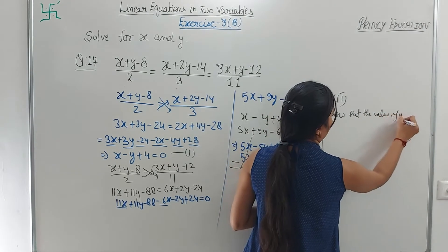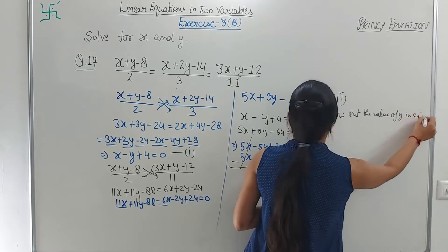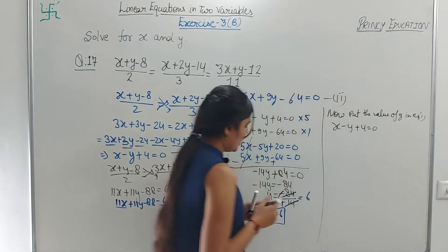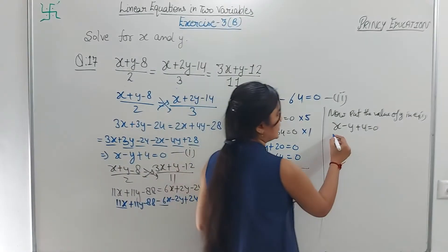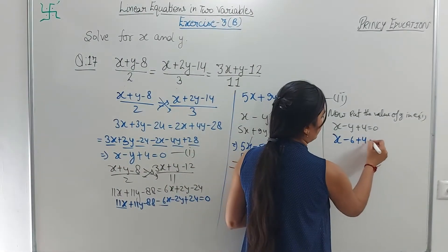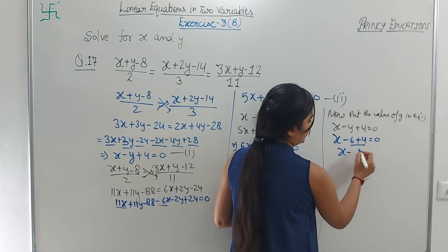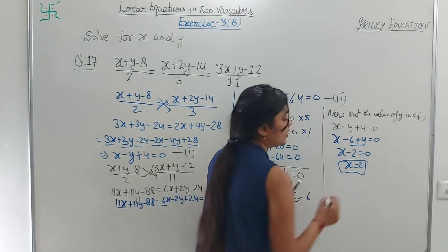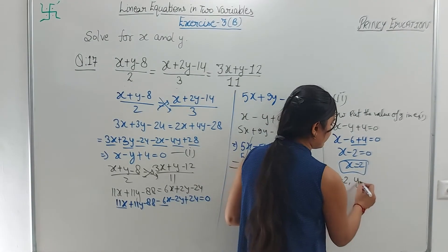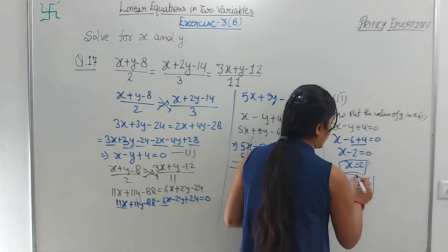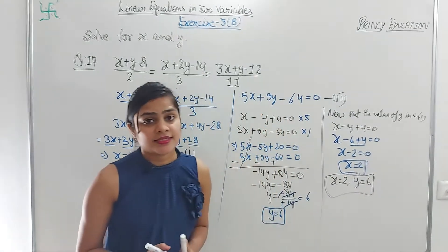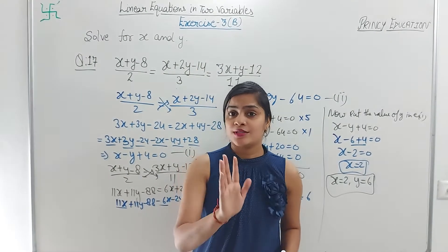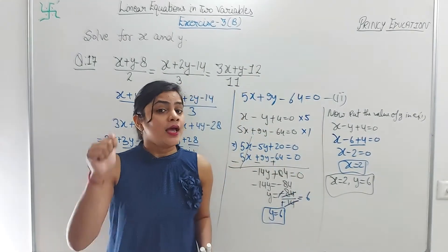Put the value of y in equation 1: x - y + 4 = 0. y = 6, so x - 6 + 4 = 0, giving x - 2 = 0, so x = 2. Therefore x = 2 and y = 6. That is the answer — this is how we solved this question.